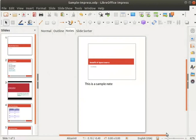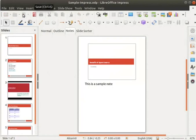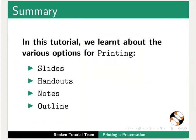Let us save all the changes we made in our presentation by clicking on the save icon, then close the file. With this, we have come to the end of this spoken tutorial. Let us summarize: in this tutorial, we learnt about the various options for printing — Slides, Handouts, Notes, and Outline.